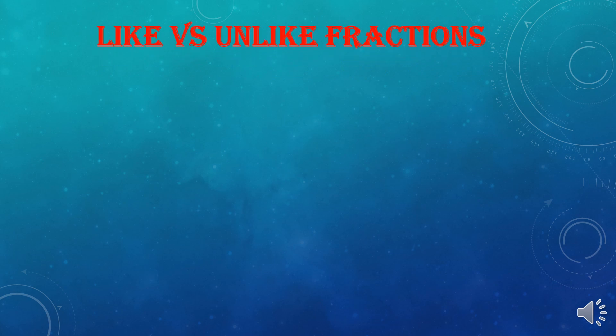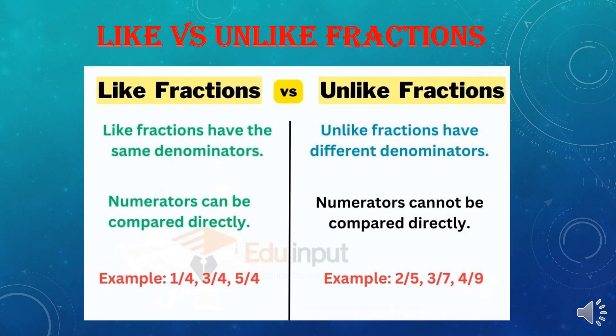Like versus Unlike Fractions: Like Fractions have the same denominator, while Unlike Fractions have different denominators. Numerators can be compared directly in Like Fractions, but cannot be compared directly in Unlike Fractions. For example, 1 by 4, 3 by 4, and 5 by 4 are examples of Like Fractions. And 2 by 5, 3 by 7, and 4 by 9 are examples of Unlike Fractions, because their denominators are different.